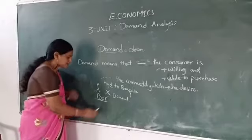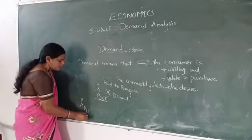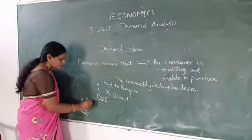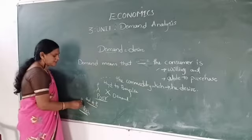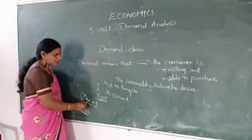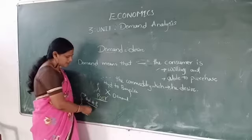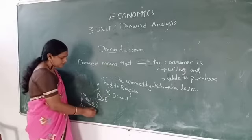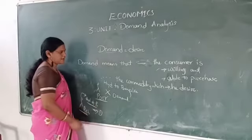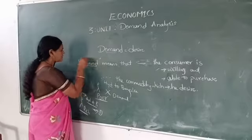But if he is a rich person, he is able to purchase the ticket from Hyderabad to Bangalore and can easily travel by air. So here he has desire and also he is able to purchase the ticket. So this is called demand.